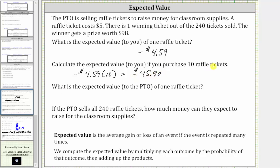The next question is: what is the expected value to the PTO of one raffle ticket? Well, if the expected value to you is negative $4.59, indicating you lose this much per ticket, then the PTO is going to gain this amount per ticket. So the expected value to the PTO is positive $4.59 for one raffle ticket, because they can expect to gain $4.59 per raffle ticket sold.